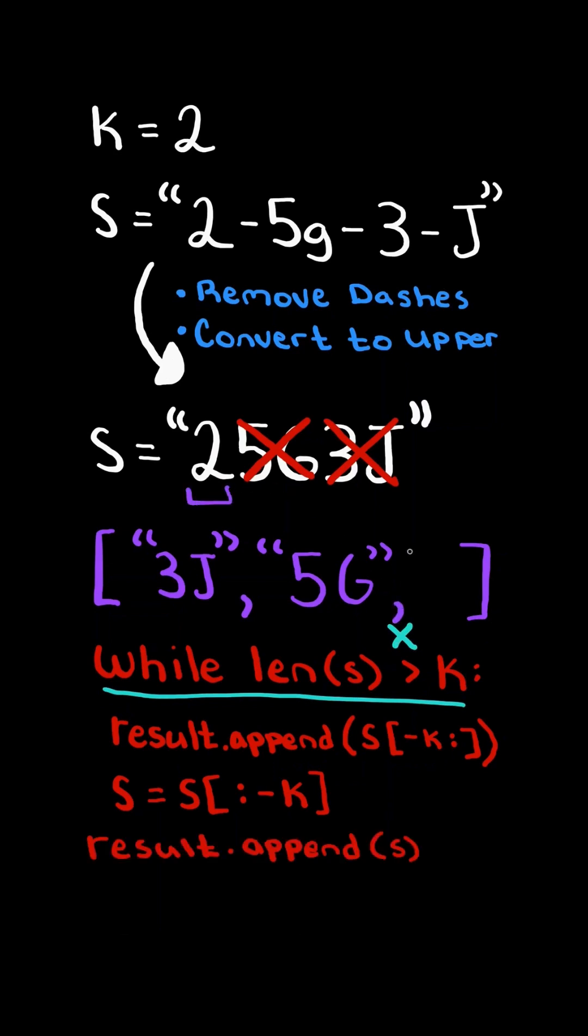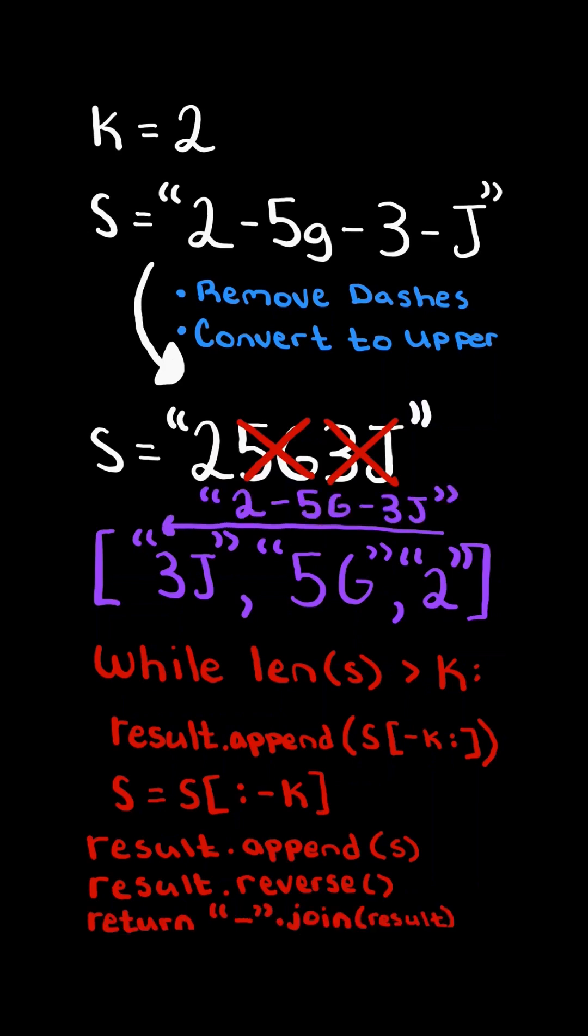So we will exit the loop and append any remaining characters of s to the list. At the end, we will reverse the list, and we will join the list together by dashes.